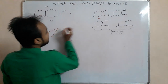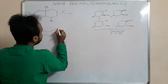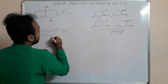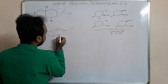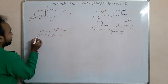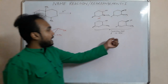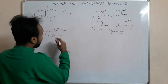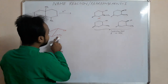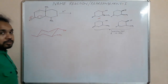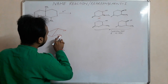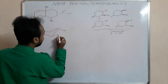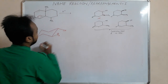In chair form: position 1 has OH below, position 2 has NH2 above, and the forward position is also above. We add NaNO2 and HCl under ice-cold conditions. The NH2 group reacts to form a diazonium salt — that is, N2+ is formed.